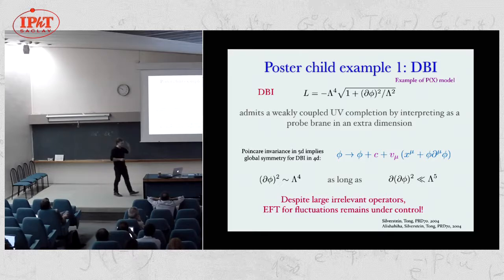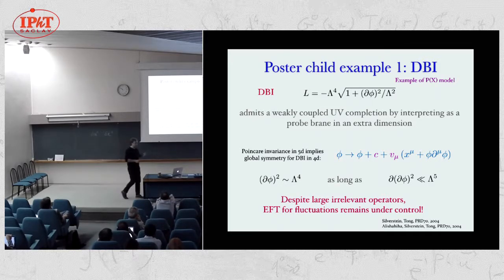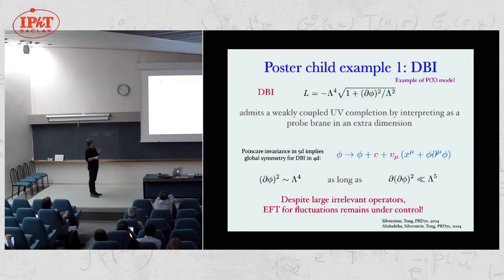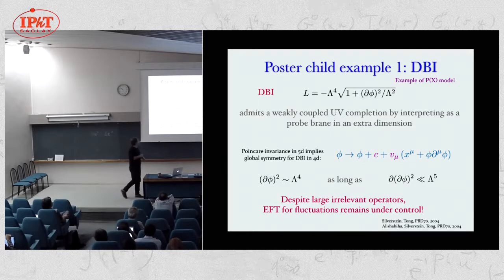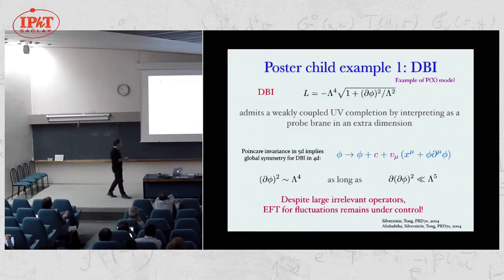The poster child example is the DBI model, a special case of P(X) models used for inflation or dark energy. The interesting phenomenology relies on looking in the regime where the kinetic term is of order the naive cutoff of the effective theory — that is, when (∂φ)² is of order λ⁴. This makes sense because we have a weakly coupled UV completion: we can think of this as a probe moving in an extra dimension, with a nonlinearly realized five-dimensional Poincaré symmetry protecting the form of the Lagrangian against quantum corrections.